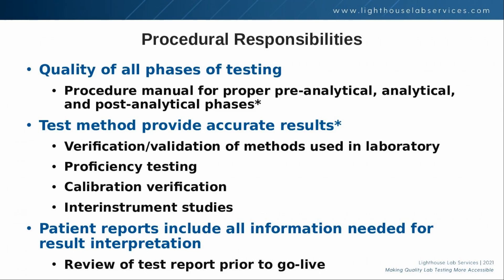A large portion of the procedural responsibilities are to make sure that the test methods used in the laboratory can provide accurate results. The first step in this process is either the verification or validation of the methods performed in the laboratory prior to patient testing. In addition, accuracy can be assessed throughout the year by proficiency testing, calibration verification if applicable, and inter-instrument studies if the laboratory is using more than one of the same instrument for the same test.